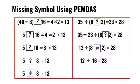We do what's inside the parentheses. 40 divided by 8 is 5. Then we're going to do it from left to right. We do 4 times 2, which is 8. 16 minus 8 is 8. 5 plus 8 is 13. So the addition symbol is the missing symbol.